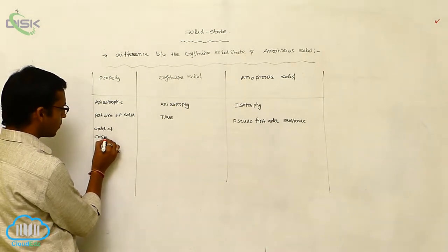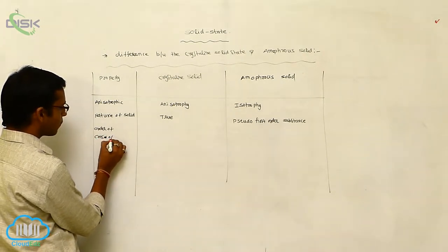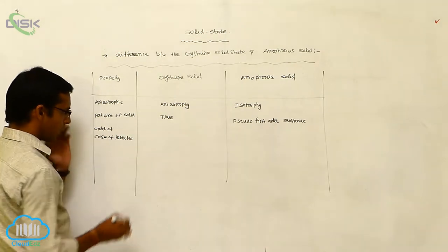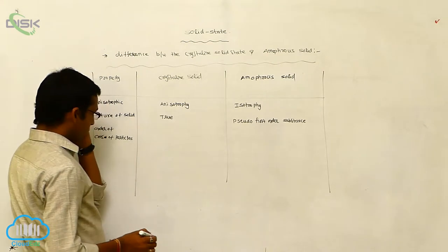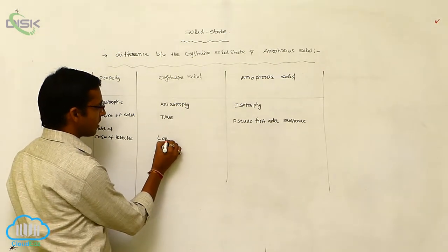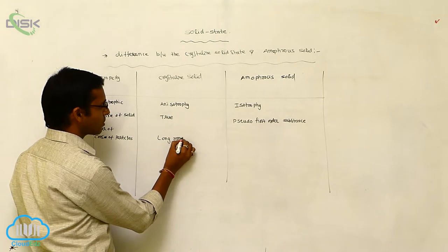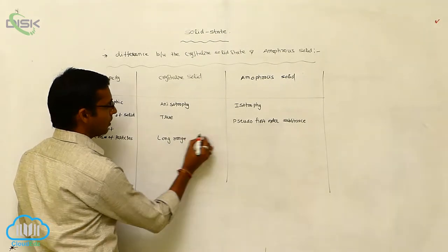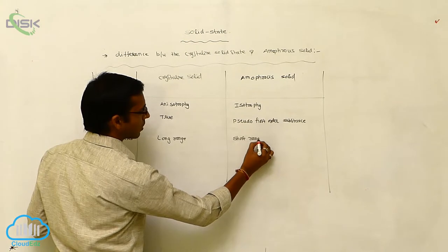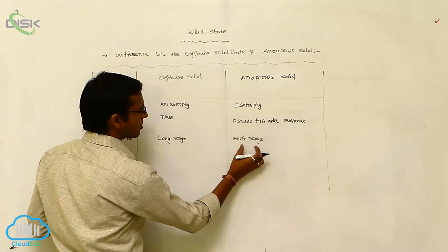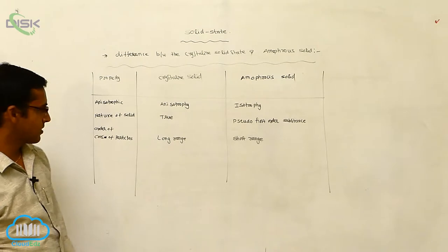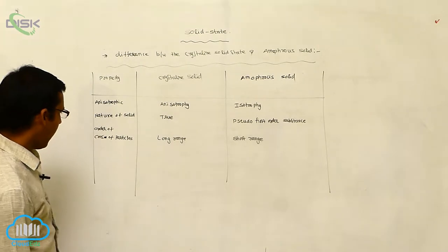The next property is the order of constituent particles — that is, what is the arrangement? Crystalline solids generally show long-range order, while amorphous solids show short-range order. So amorphous solids are short-range substances and crystalline solids are long-range substances.